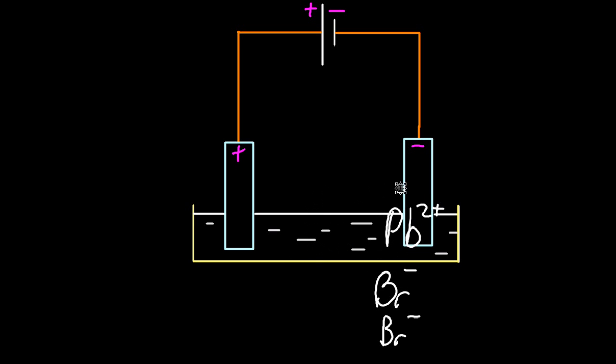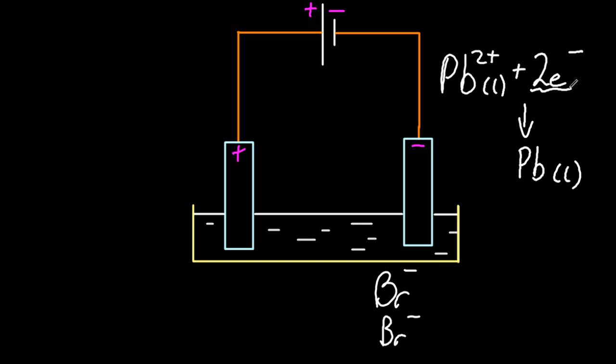Those are the two ions. The lead ion is attracted to the negative electrode, which is full of electrons, and two of those electrons come off of that electrode, go onto the lead, to make liquid lead. I thought lead was a solid. No, this is very hot. You had to melt the lead bromide, so it's going to be a liquid lead.